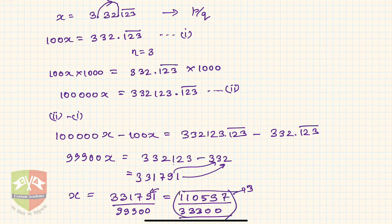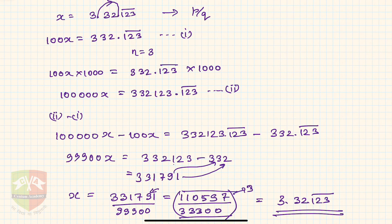You must also have a habit of checking your calculation. This was our representation for x, which was 3.32123 bar, and doing this gives us back 3.32123 bar. Please check the problem solving sessions for more such problems. Once you follow the steps and try 5 to 6 problems, you will get a command over the process. I hope you understood the process of converting a mixed non-terminating repeating decimal into p by q form. Thank you.